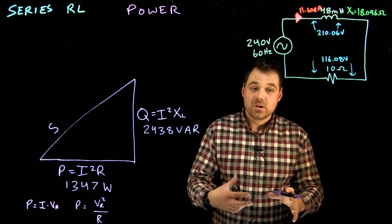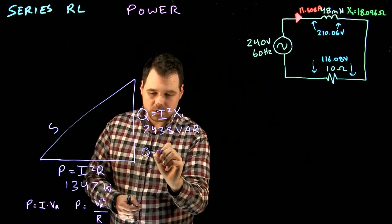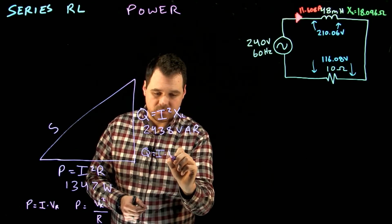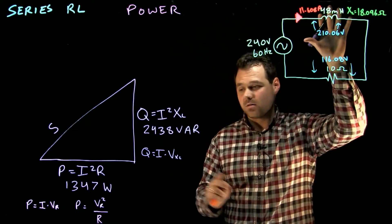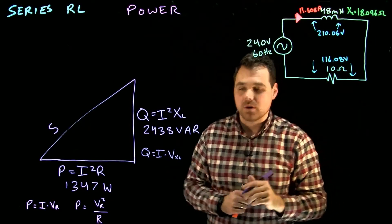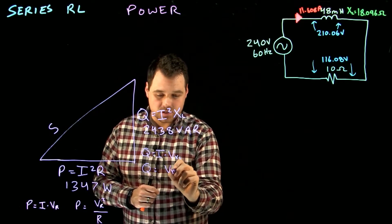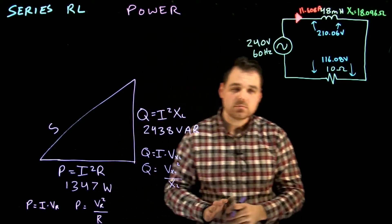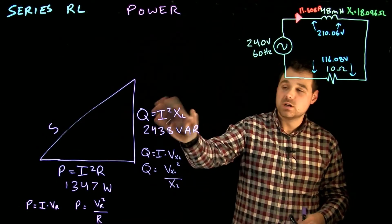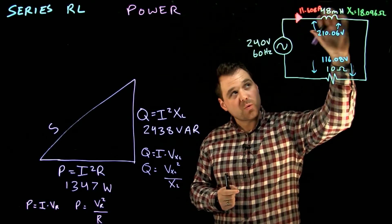I can use a couple other formulas if I want to. I could go Q equals I times VXL. The voltage across my inductor. I can use that times my current. Or I can go Q equals VXL squared divided by XL. It should all work out. The one I like the most is the I squared XL because it makes sure you're using the right component.